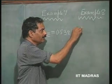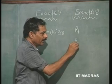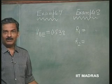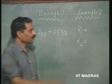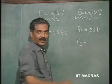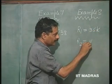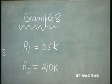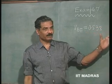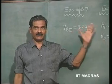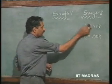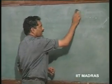In Example 8, I asked you to find out R1 and R2 for biasing. That comes out as R1 equal to 35K and R2 equal to 140K. These are the answers which you should have obtained while calculating. All these problems you must work out and verify whether these values are correct or not.